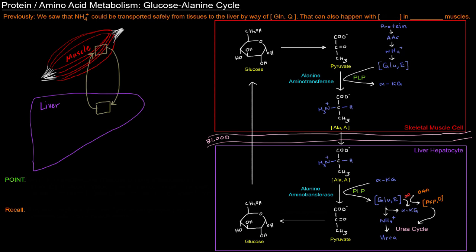Previously we saw that ammonium ion can be transported safely from tissues to the liver by way of glutamine, glutamine being the main amino acid that carries nitrogen through the blood and around the body.